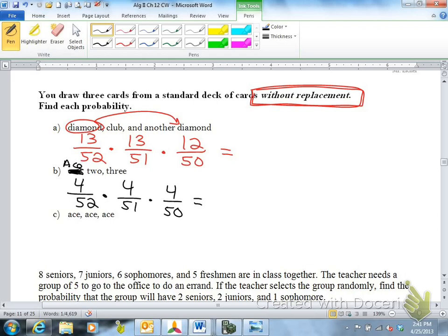And then ace, ace, ace. And it's probably going to be very unlikely to get ace, ace, ace. You have four over 52. Three, because you're not replacing them. Three over 51. And then two over 50. And let's get all those numbers.